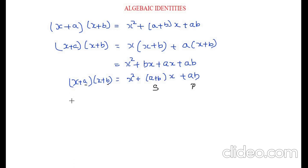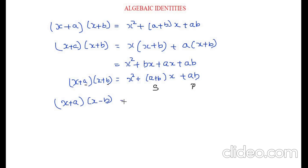Now we have more formulas with (x − a)(x − b) and (x + a)(x − b) — there are four formulas like this. Instead of remembering all four formulas, it is better to remember only this one formula. For example, if you have (x + a)(x − b), instead of remembering a separate formula, a simple way is to write x − b as x + (−b), taking b as negative b.